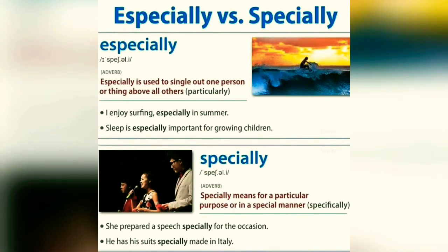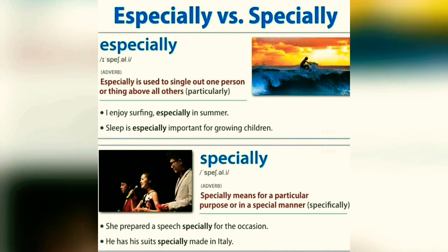Especially versus Specially. 'Especially' (with an E) is an adverb used to single out one person or thing above all others — meaning 'particularly.' Example: I enjoy surfing, especially in summer; sleep is especially important for growing children. 'Specially' (without the E) is also an adverb and means for a particular purpose or in a special manner — meaning 'specifically.' Example: she prepared a speech specially for the occasion; he has his suits specially made in Italy. Note: 'especially' means particularly, while 'specially' means specifically.